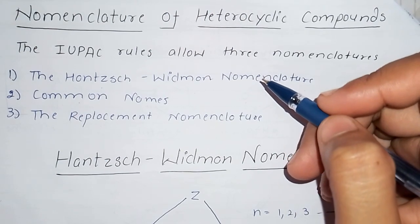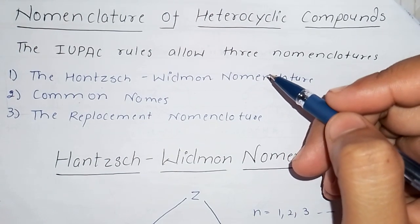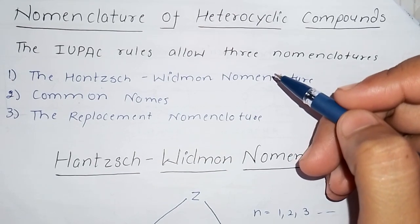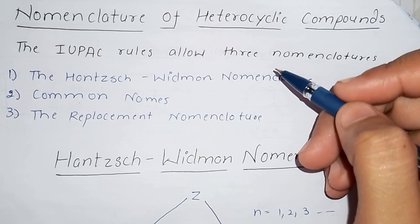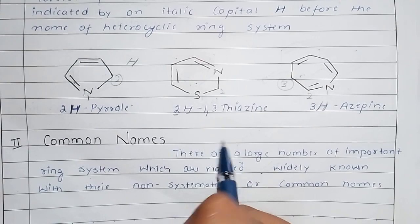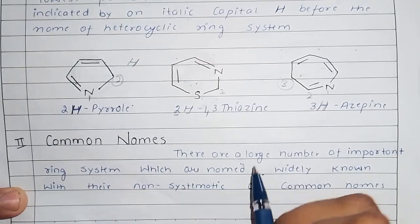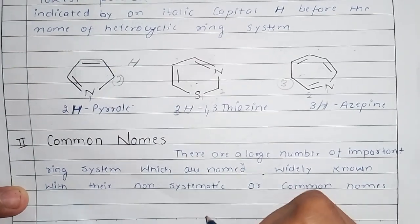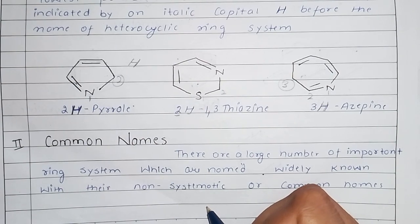Almost all of us know about common names from organic chemistry. You will also study these in your class. Common names are specific names we learn for particular compounds. There are a large number of important ring systems which are widely known by their non-systematic and common names. We will look at common structures and their common names.